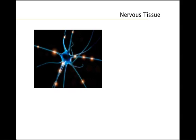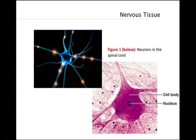Nervous tissue senses stimuli and rapidly transmits information from one part of an animal to another. The structural and functional unit of nervous tissue is the nerve cell, or neuron, which is uniquely specialized to conduct electrical nerve impulses.